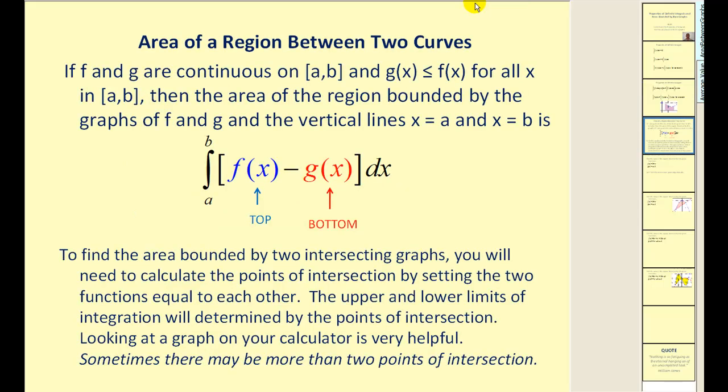Let's focus on the area of a region between two curves or two graphs. If f and g are continuous on the closed interval and g is less than or equal to f of x for all x in the interval, then the area of the region bounded by the graphs and the vertical lines x equals a and x equals b is given by this definite integral. The key to remember is we always have to have the top function minus the bottom function.